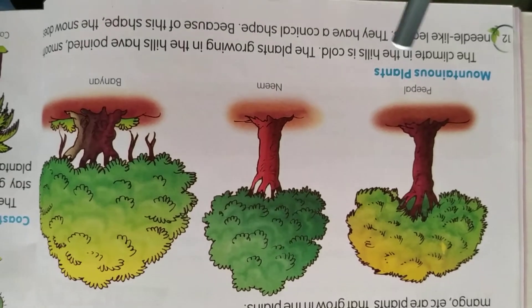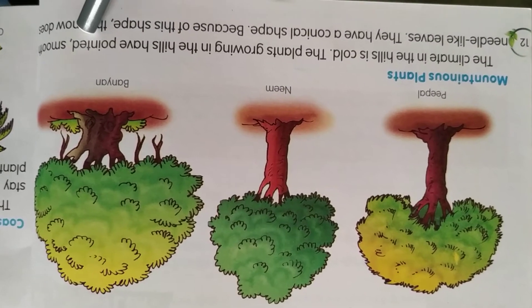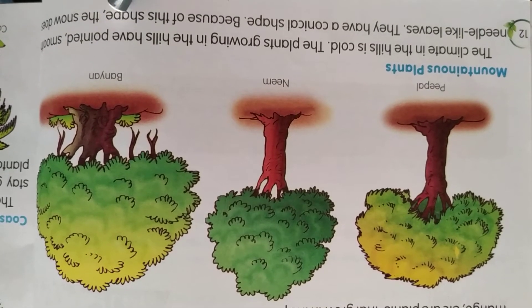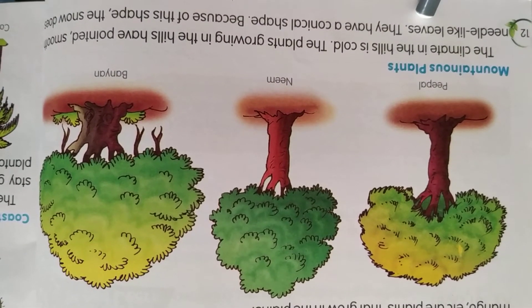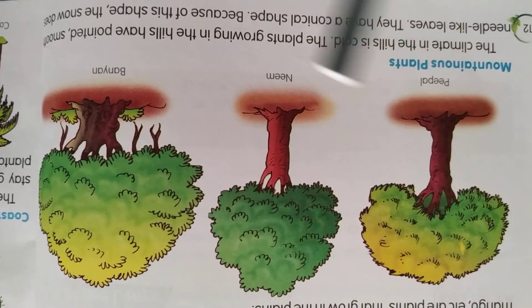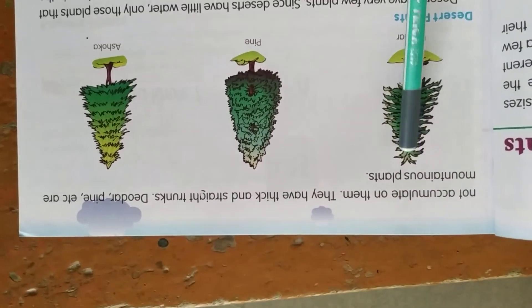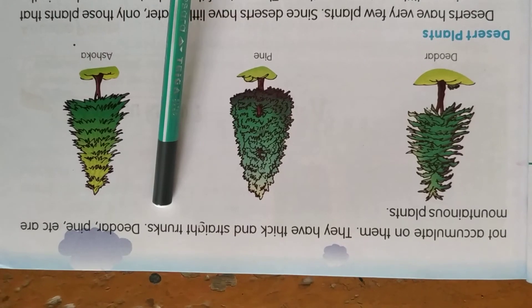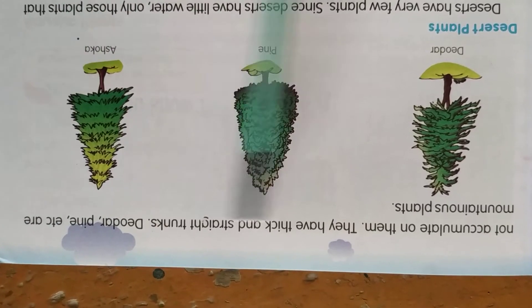The climate in the hills is cold. Plants growing in the hills have pointed, smooth, and needle-like leaves. They have a conical shape so that snow does not accumulate on them. They also have a thick and straight trunk. Pine and similar trees are mountainous plants.